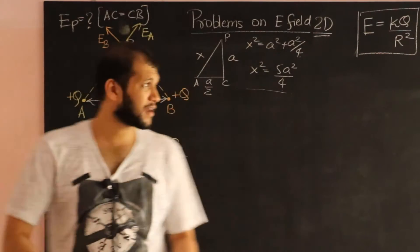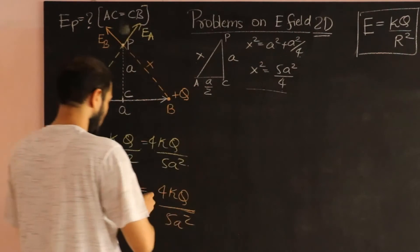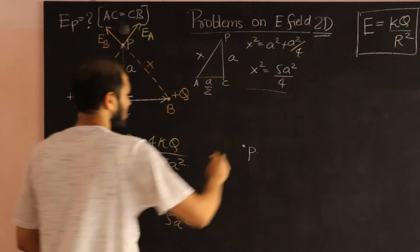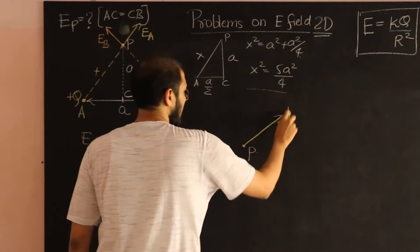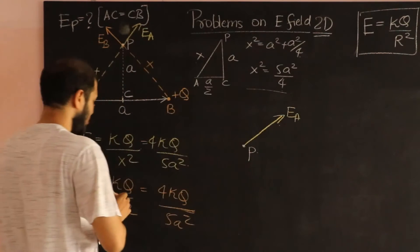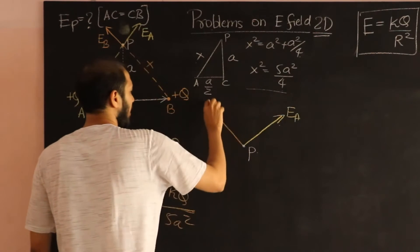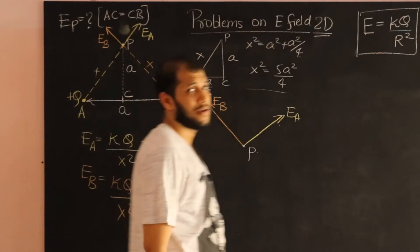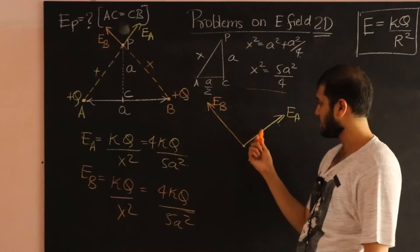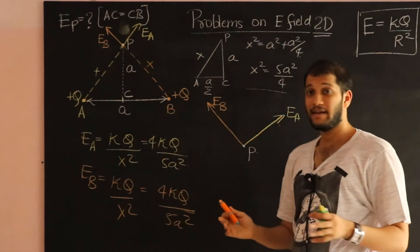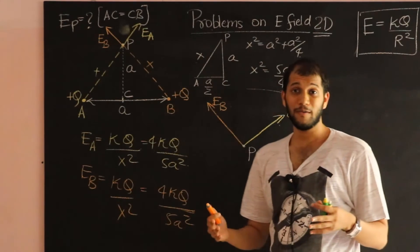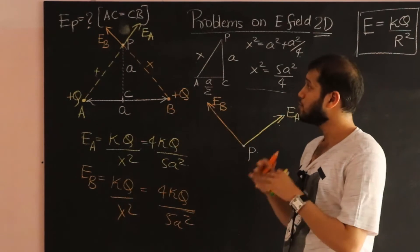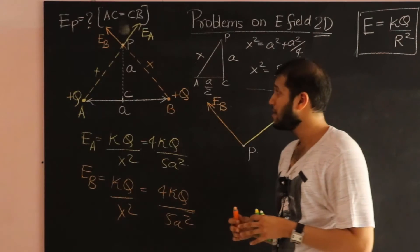And now we need to add them vectorially. Let me redraw that, because it's going to get crowded over there. So, here's a point P. And here is vector EA. And here is vector EB. Either I have to know what this angle is, and then I can use a direct vector addition formula, parallelogram law. Or, I think a better way to solve this would be by decomposing them into two perpendicular directions.